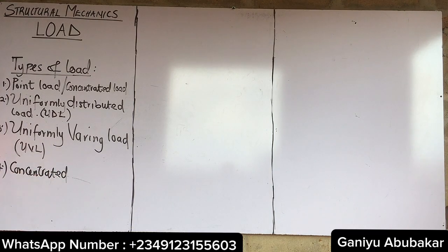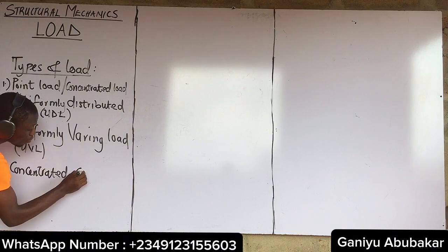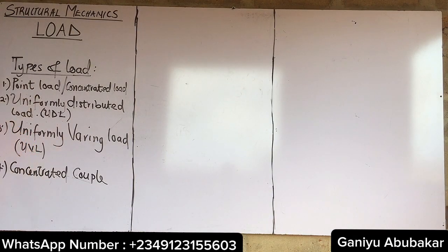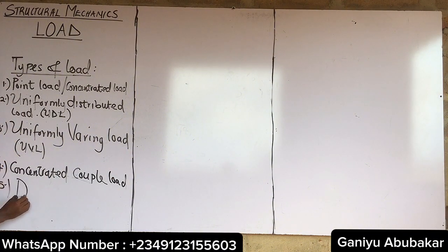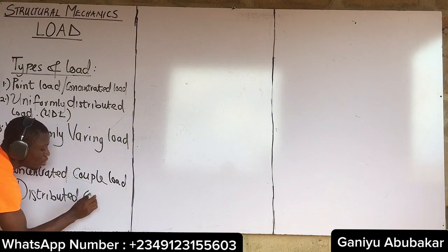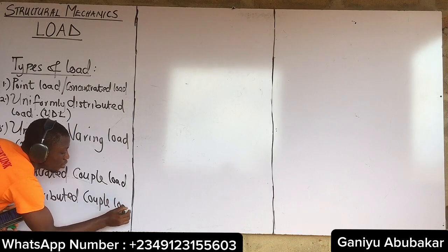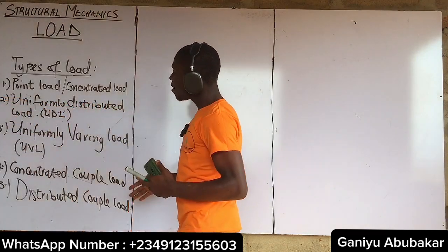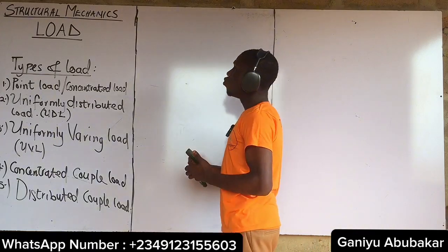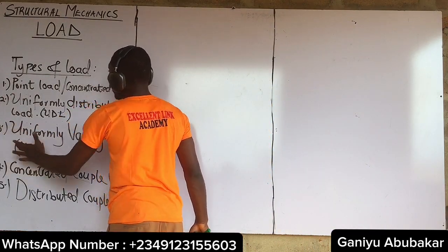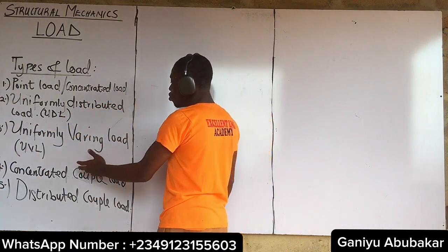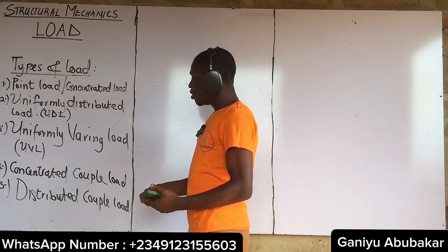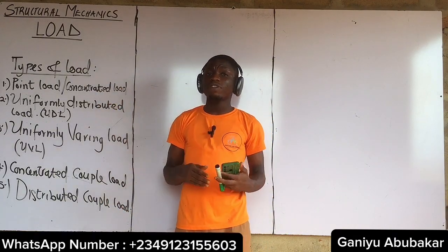Aside from the three major types, we also have the concentrated couple load and the distributed couple load. These are the five types of load in total. The first three — point load, UDL, and UVL — are the major ones. I'm showing you these two additional ones just to indicate that they exist.